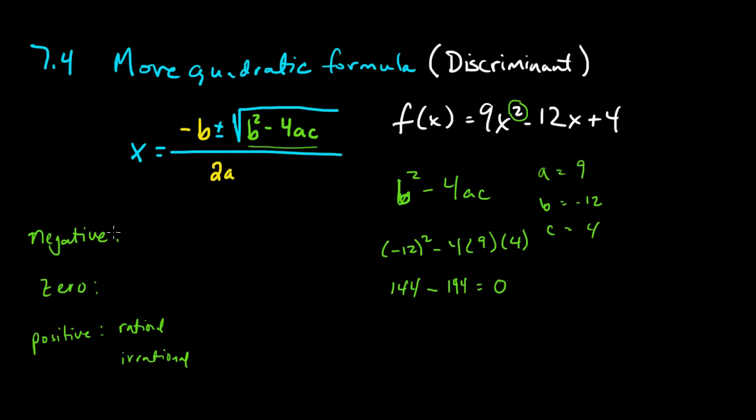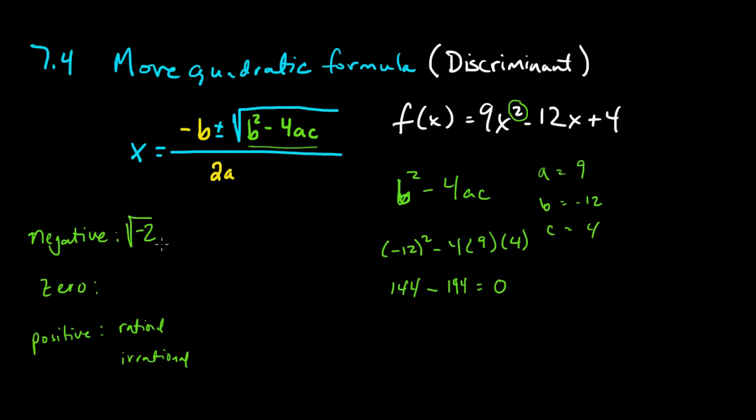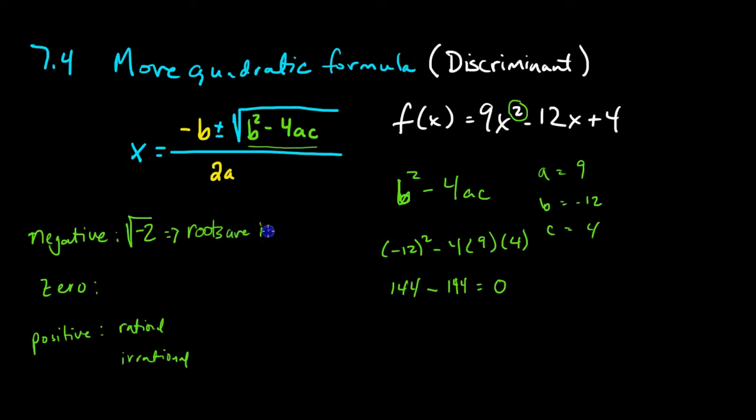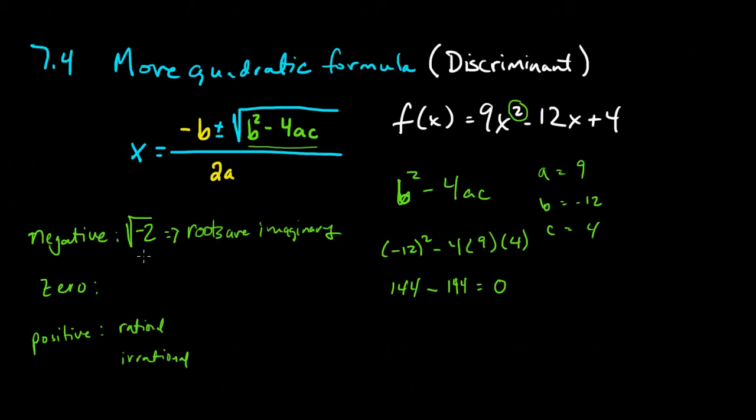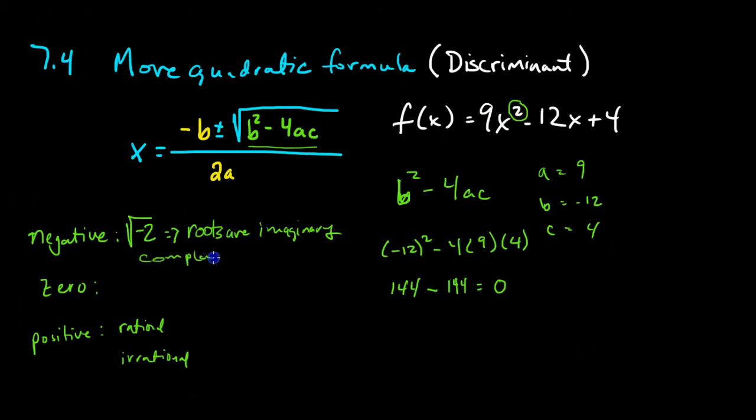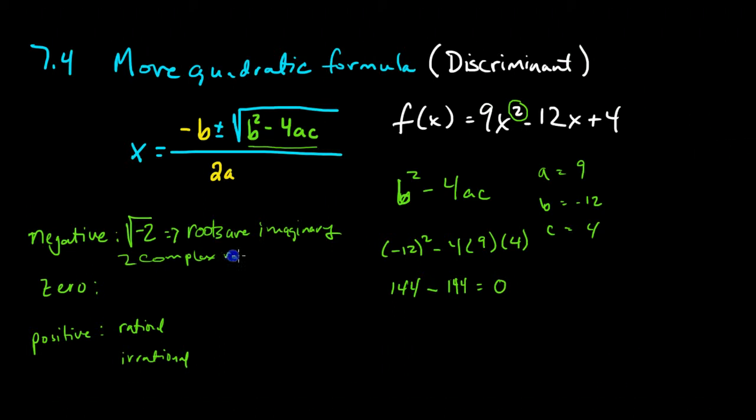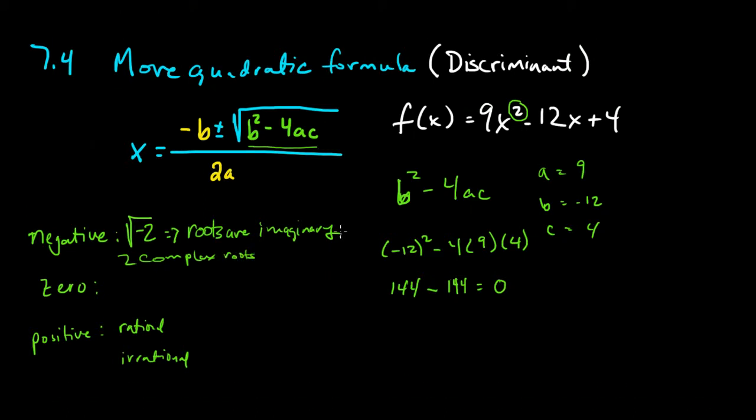So with a negative discriminant, what we'll have is underneath the radical, we will have a radicand that is negative. And what do we know about negative numbers under the radical? Something like the square root of negative 2. Well, what we know about that is that that is an imaginary number. So therefore, our roots are imaginary, or better yet, let's call them complex. So you'll have two complex roots when your discriminant is negative.